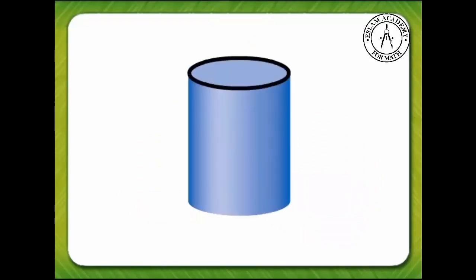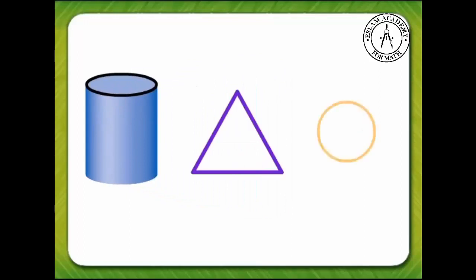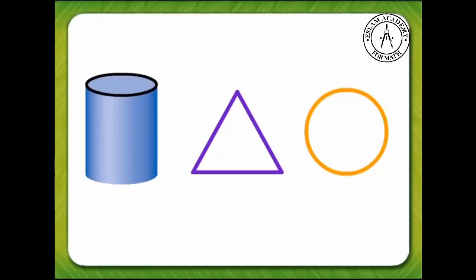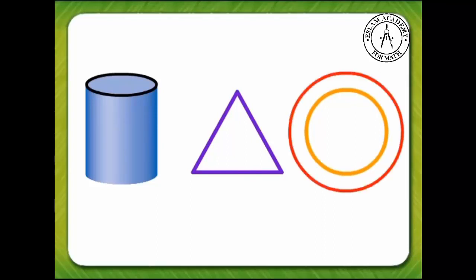Trace one face of a cylinder. What two-dimensional shape matches the face that we traced? Is it a triangle? No. Is it a circle? Yes. So, the face of a cylinder is a circle.